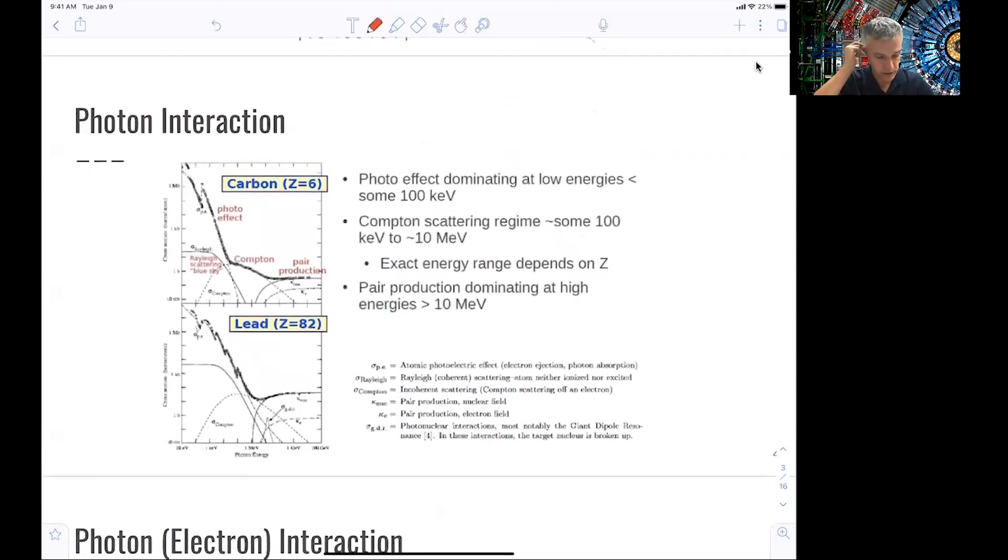This plot shows you the cross-section as a function of the photon energy. And you see here very nicely those three effects contributing to the total cross-section. For low energies, in the range of some 100 keV, the photo effect dominates. Then there is this intermediate range from about 100 keV to about 10 MeV, where we see the effect of Compton scattering. And everything above this is dominated by pair production. This shows you there are some differences in what kind of material you interact with, of course.